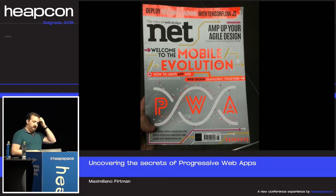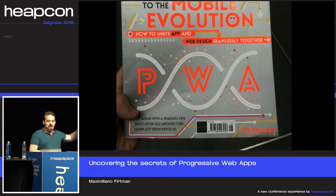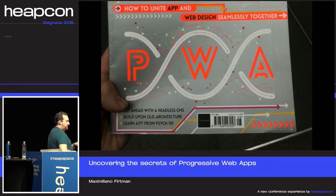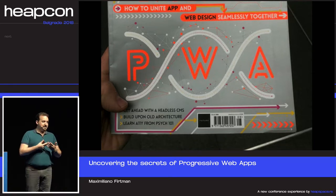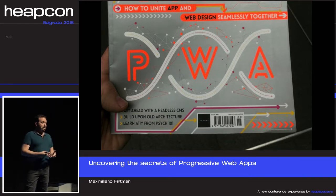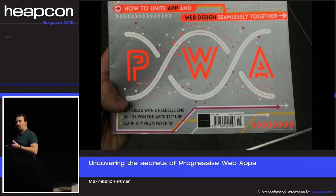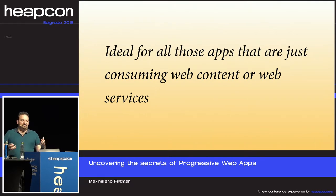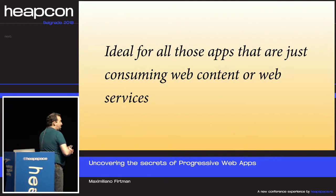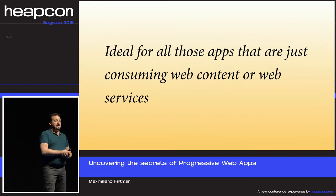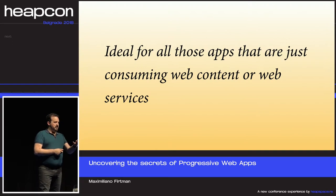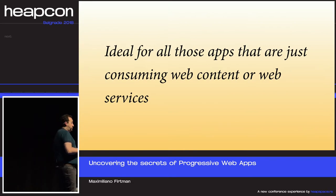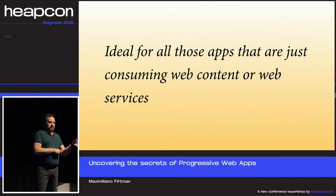PWA is just the new or current DNA of the web. We're still talking about the web platform — it's how you create websites and web apps, but now we have new APIs that let us create better experiences. It's ideal for apps that are just consuming web content from web services. Think about it — a lot of apps in stores are just downloading a JSON file from a server and rendering it. That's basically creating a custom browser for your content only, which doesn't make much sense.